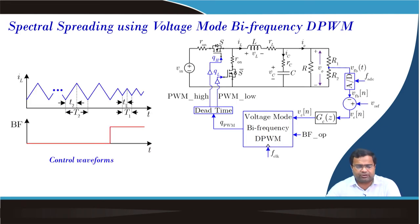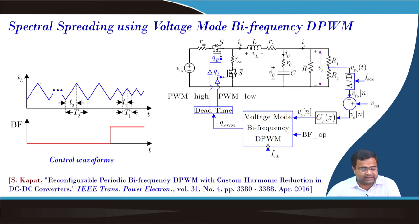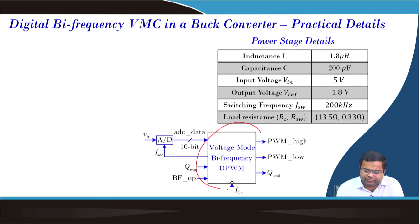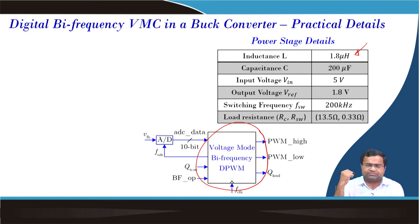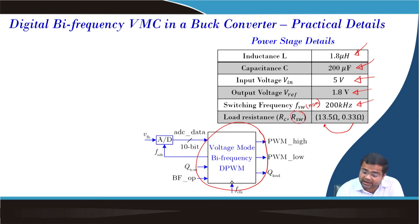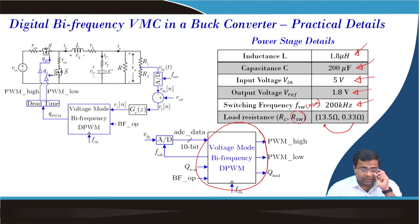We have discussed this bi-frequency modulation technique in detail and this conceptual waveform also in the previous lecture, and the details about this technique are discussed in the research paper. We have already designed this block using Verilog HDL. Our hardware prototype uses a specific inductor value and capacitor value, with an input voltage of 5 volts, reference output of 1.8 volts, and a nominal switching frequency of 200 kilohertz. The load resistance is changed between 13.5 ohms, where the switched load is connected or disconnected to create load step-up and step-down transients. This is our schematic diagram.